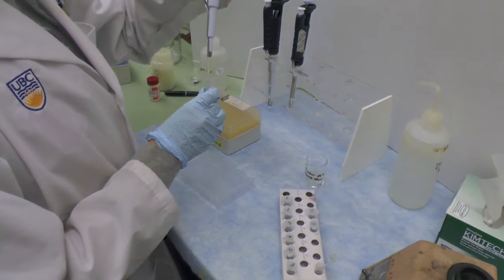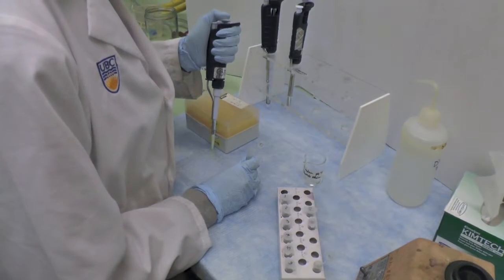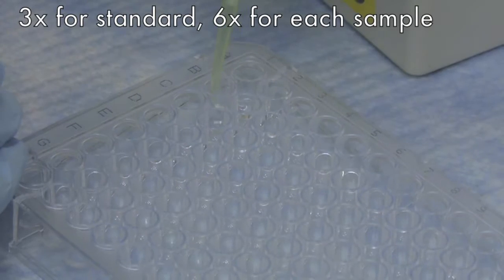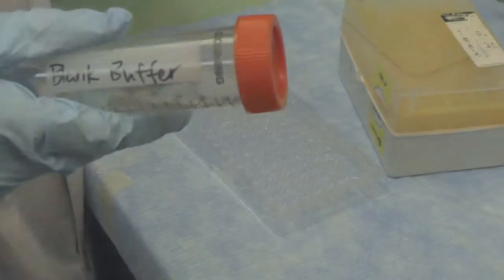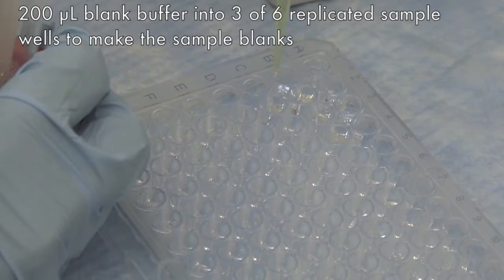Pipette 5 microliters of milk samples or standard into each well. Perform triplicate for standard and 6 replicates for samples. Pipette 200 microliters of blank buffer into wells containing sample. These will be your sample blanks.